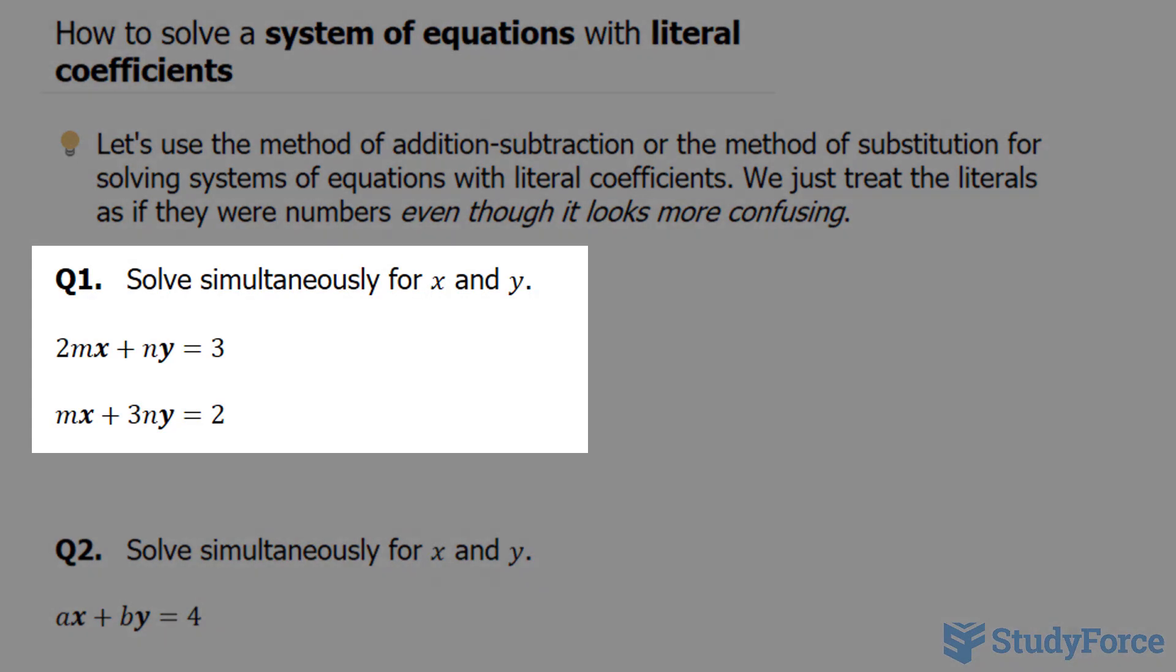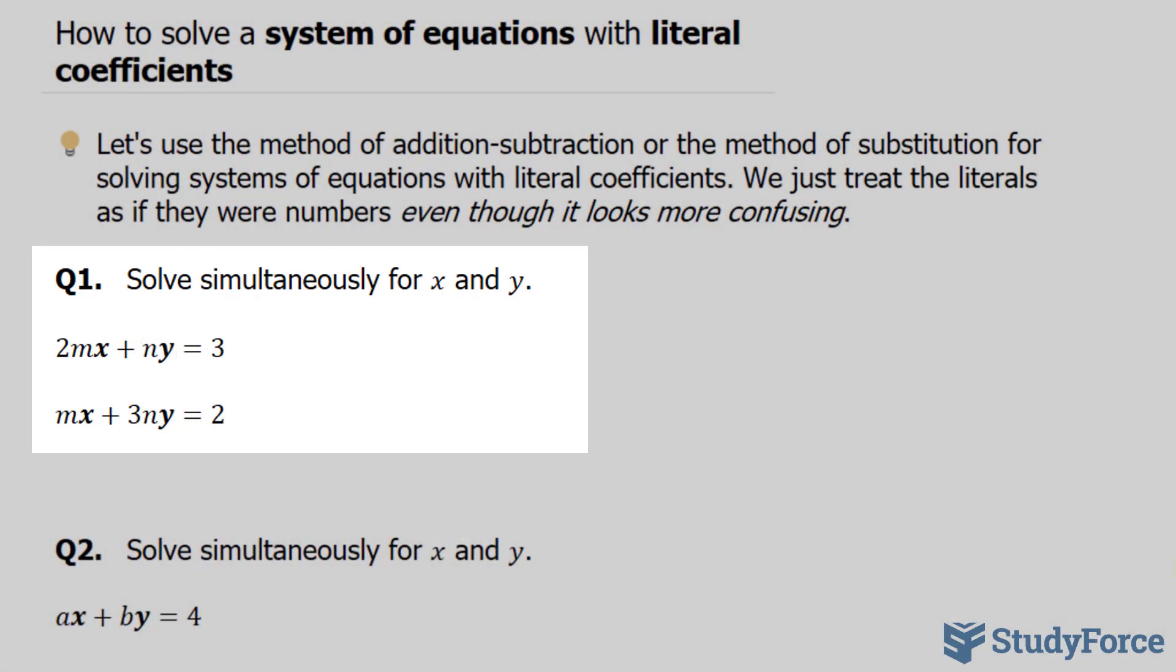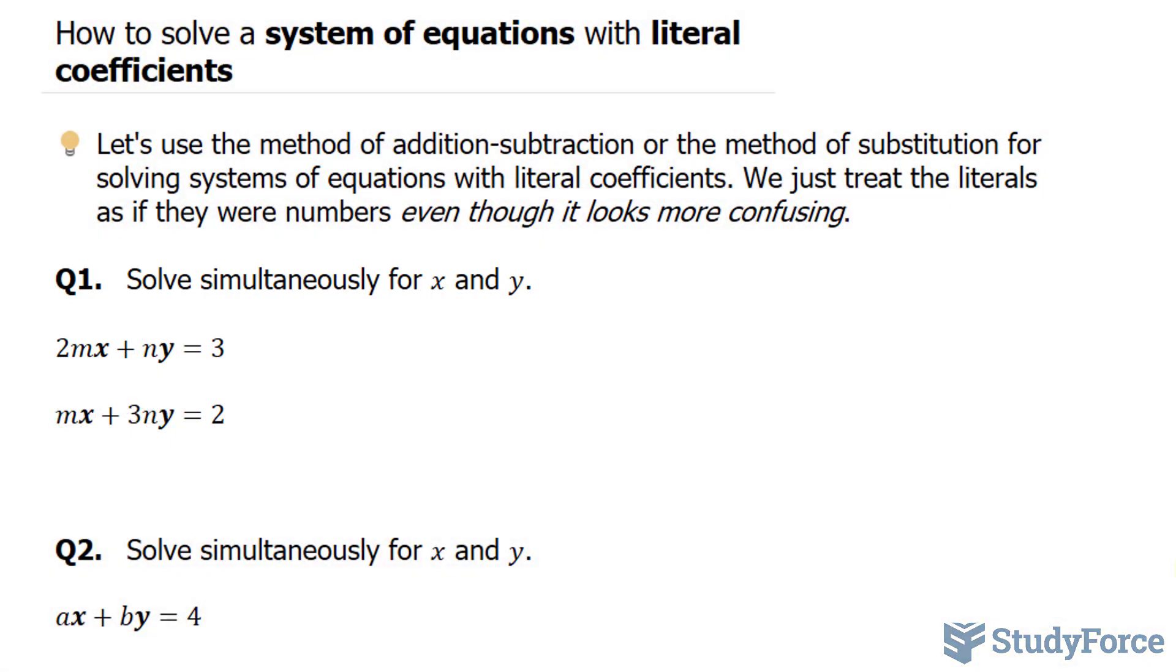Take a look at question number one. They want us to solve simultaneously for x and y. The coefficient of this x term is 2m and the coefficient of this y term is n. Similarly, here it's m and over here it's 3n. We need to find out what x and y is equal to.